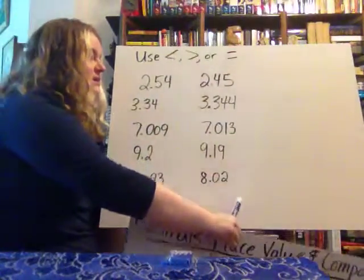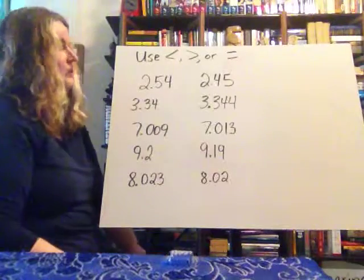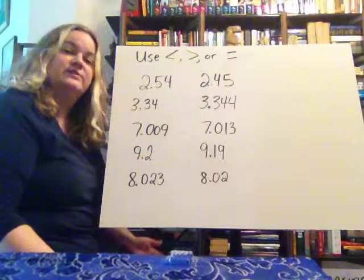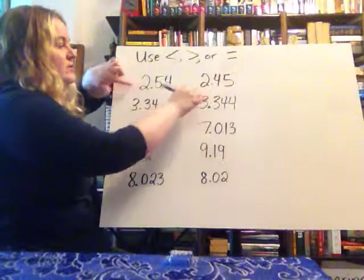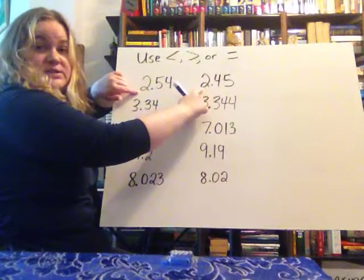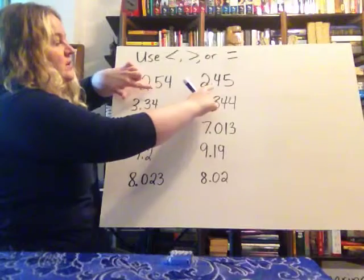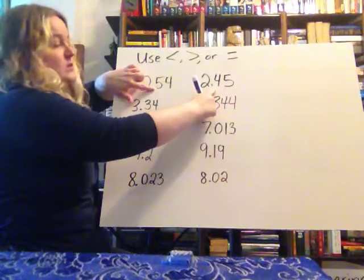So if we take a look at then comparing, when we're comparing, we're looking at place value, and we're going to start by going here and moving over. So for instance, since the ones place is the same in both of these, we go over to the next place, which is the tenths place.